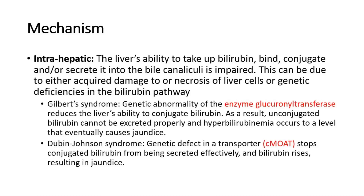For intra-hepatic jaundice, the liver's ability to take up bilirubin, bind, conjugate, and secrete it into the bile canaliculi is impaired. This can be due to either acquired damage to or necrosis of liver cells, or genetic deficiencies in the bilirubin pathway, such as Gilbert's syndrome and Dubin-Johnson syndrome. In Gilbert's syndrome, there is a genetic abnormality of the enzyme glucuronosyltransferase; this reduces the liver's ability to conjugate bilirubin. As a result, unconjugated bilirubin cannot be excreted properly, and hyperbilirubinemia occurs to a level that eventually causes jaundice.